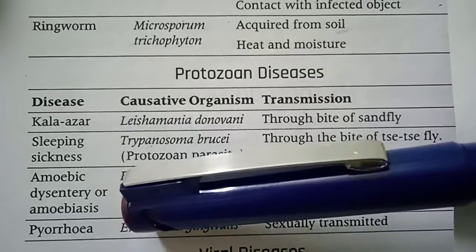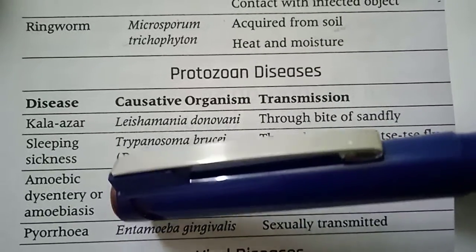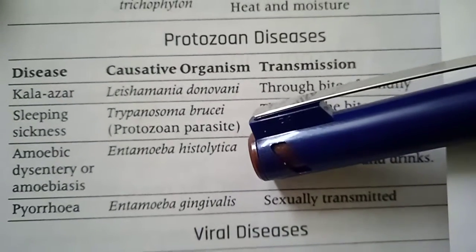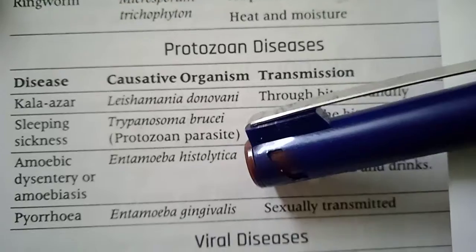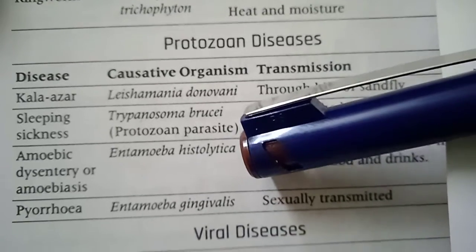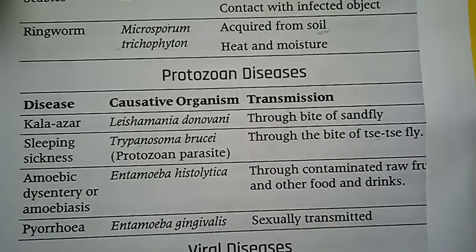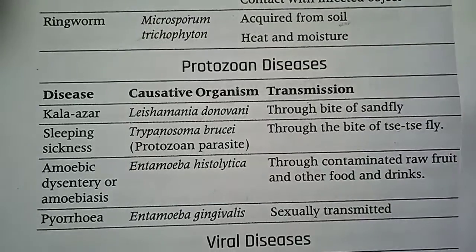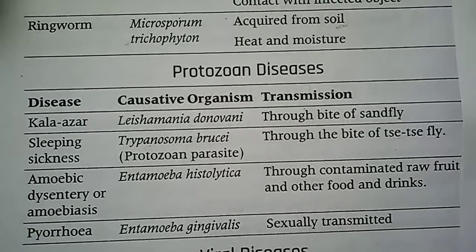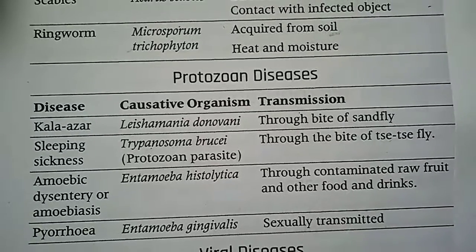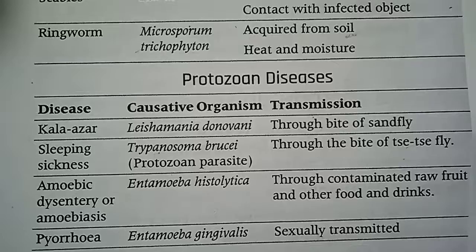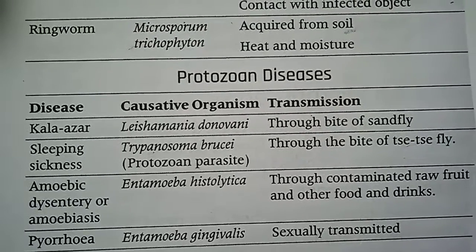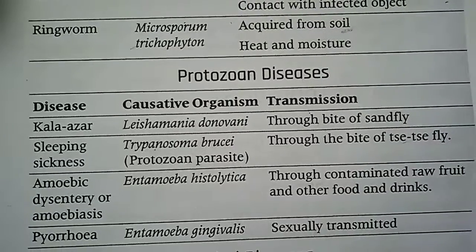Amoebic dysentery, or amoebiasis — the causative organism is Entamoeba histolytica. Transmission occurs through contaminated raw food, fruits, drinks, and water.